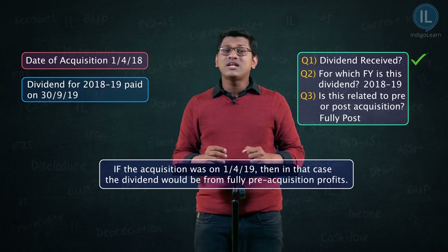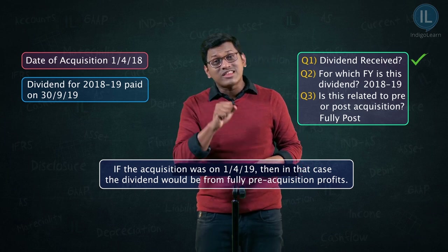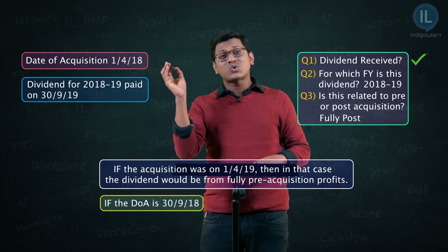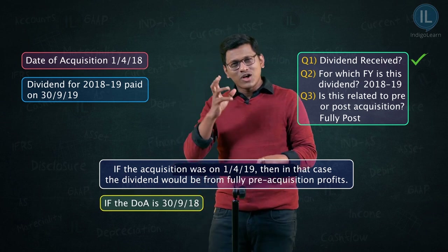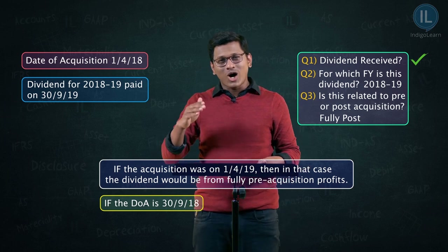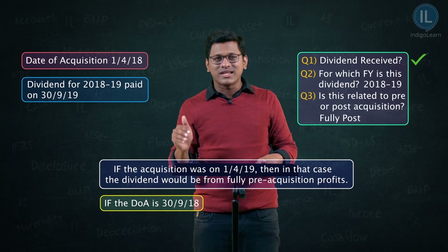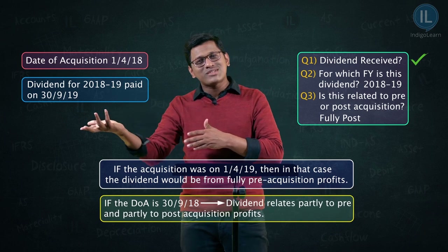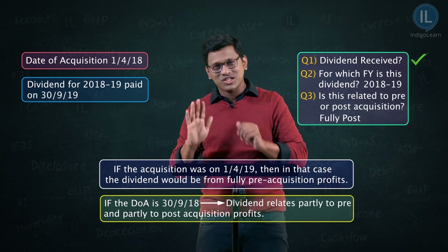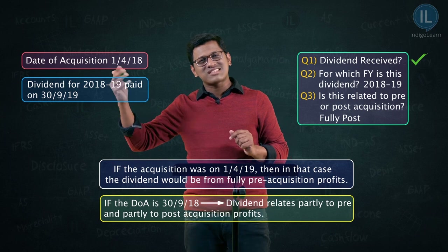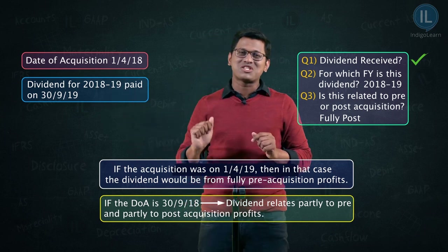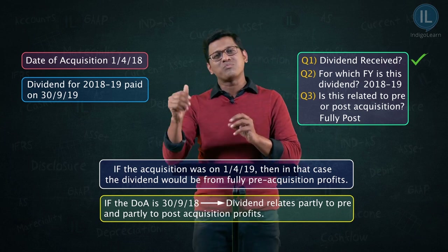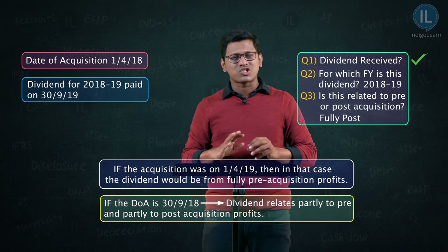What if the date of acquisition is 30th September 2018 — not at the beginning, not at the end, but during the year? Then you would consider that partly it is pre-acquisition and partly post-acquisition. In such cases, the first 6 months will be pre-acquisition and the next 6 months will be post-acquisition. So whatever dividend you receive, one portion is pre-acquisition and the other is post-acquisition.